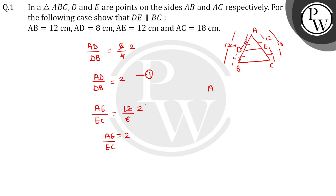AD by DB from equation 1 and 2. AD by DB which is equal to AE by EC. What can we do? By Converse of BPT, what will happen? DE is parallel to BC.